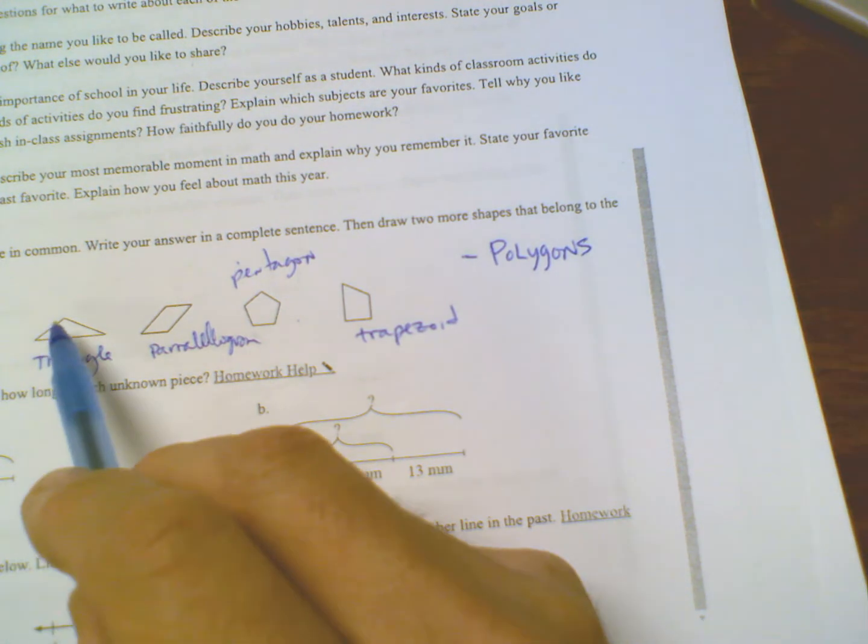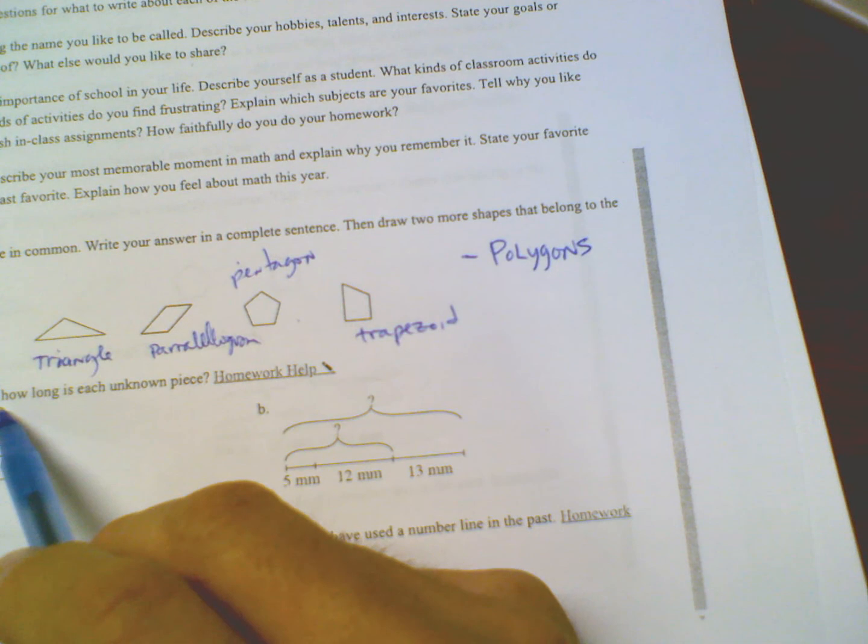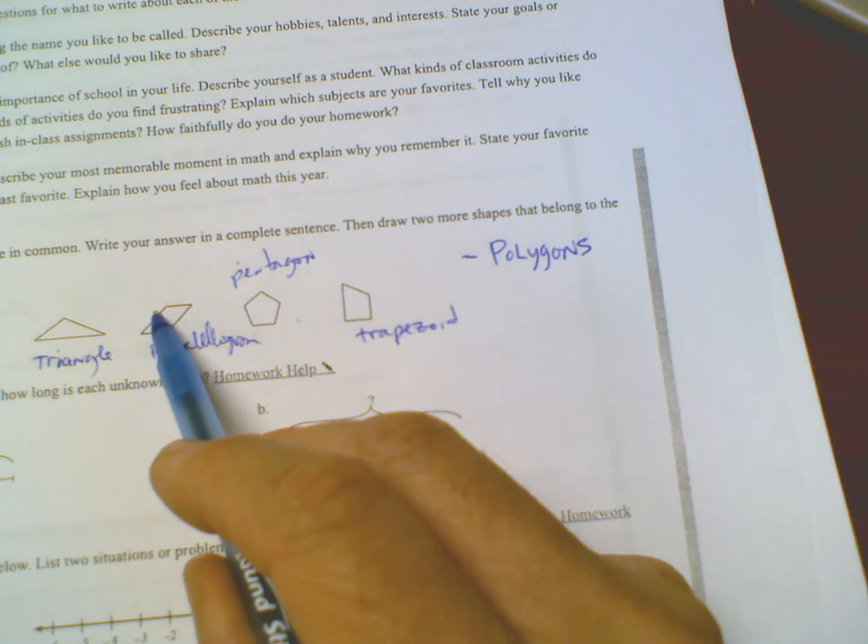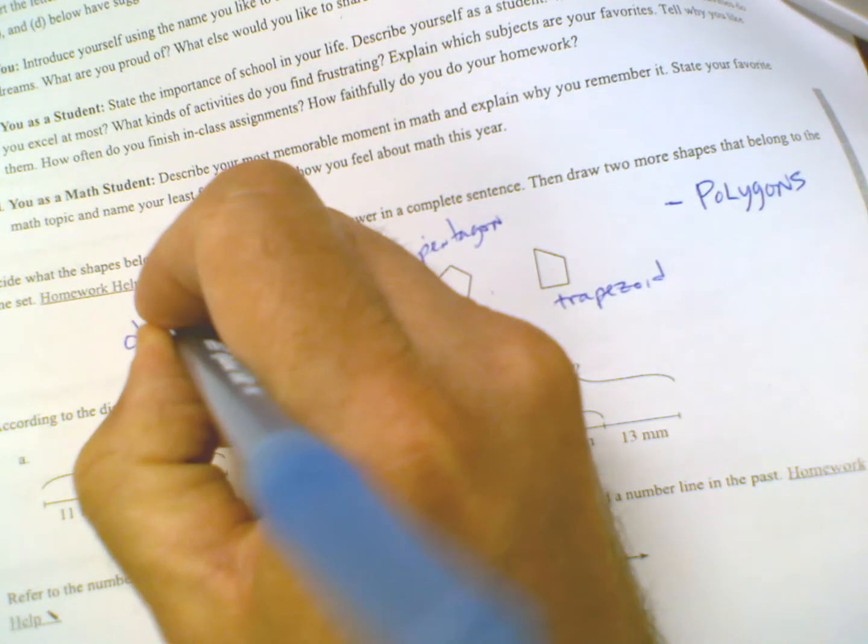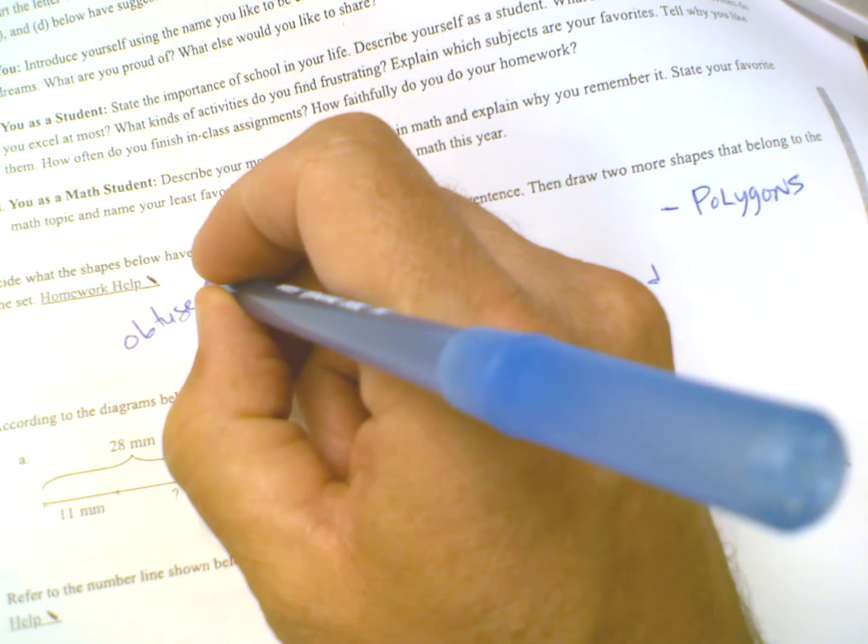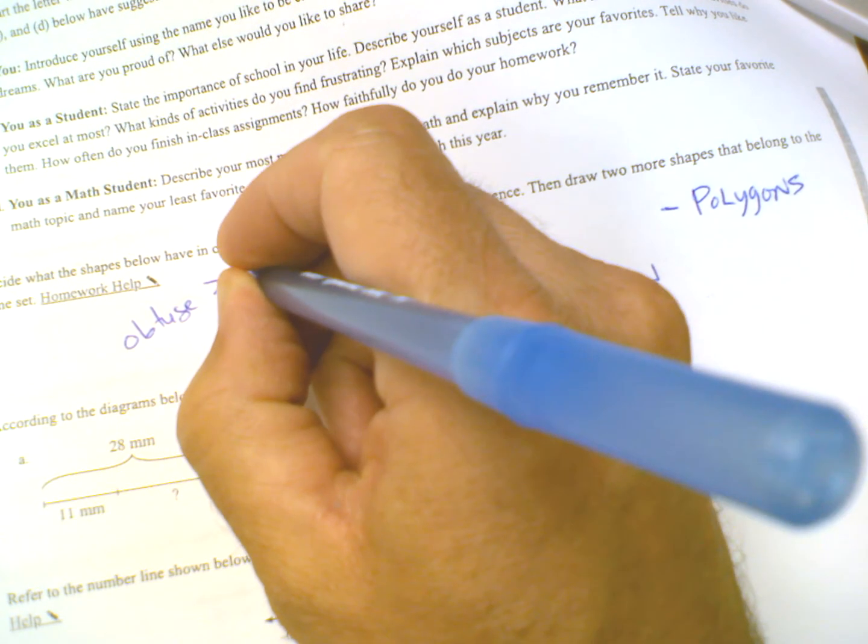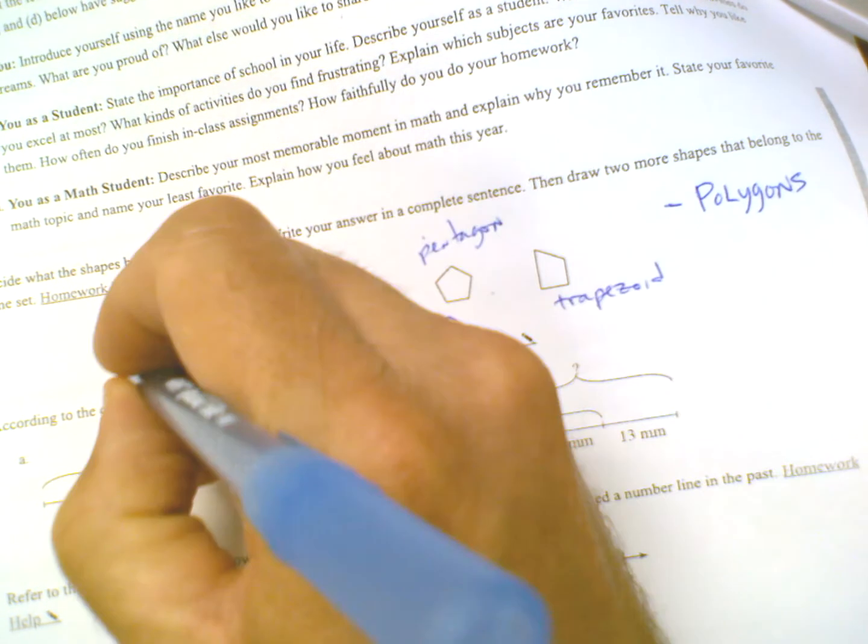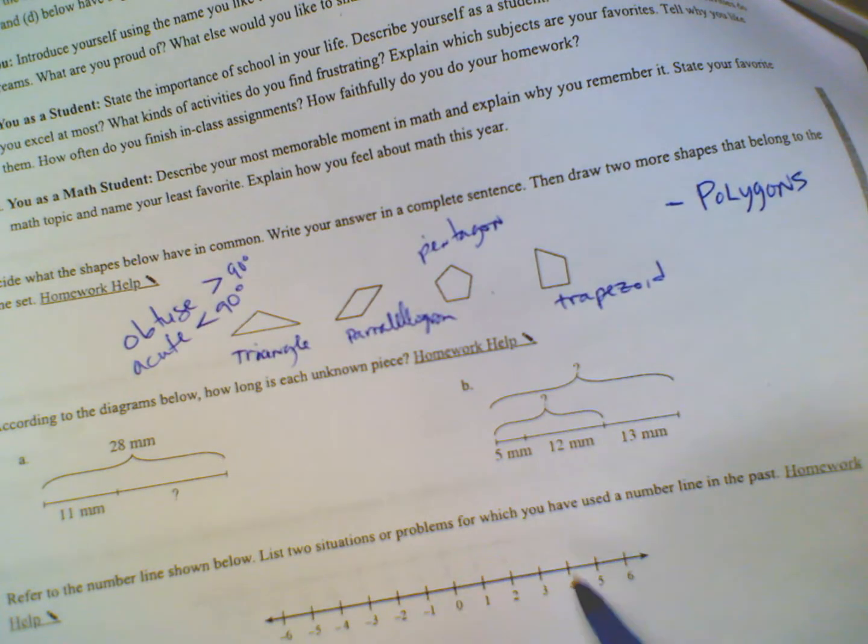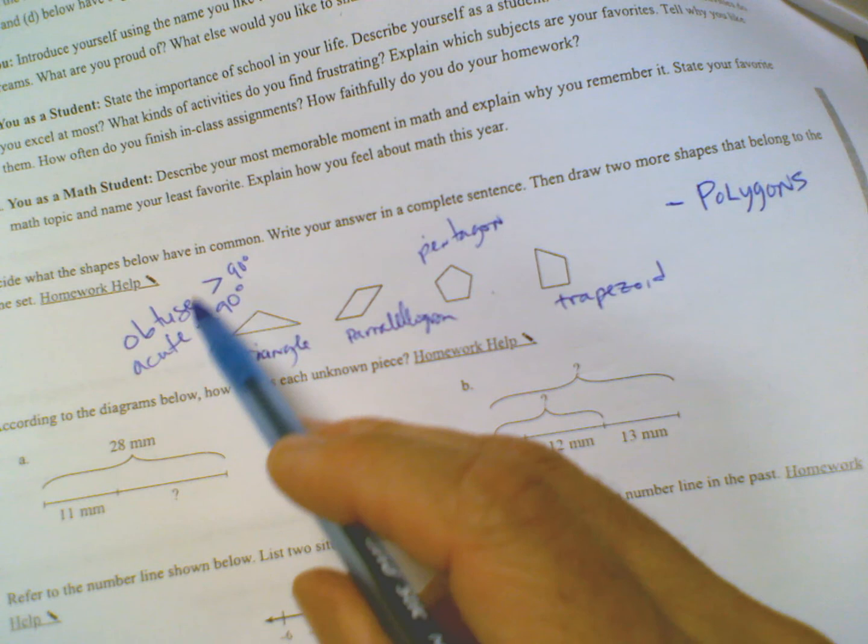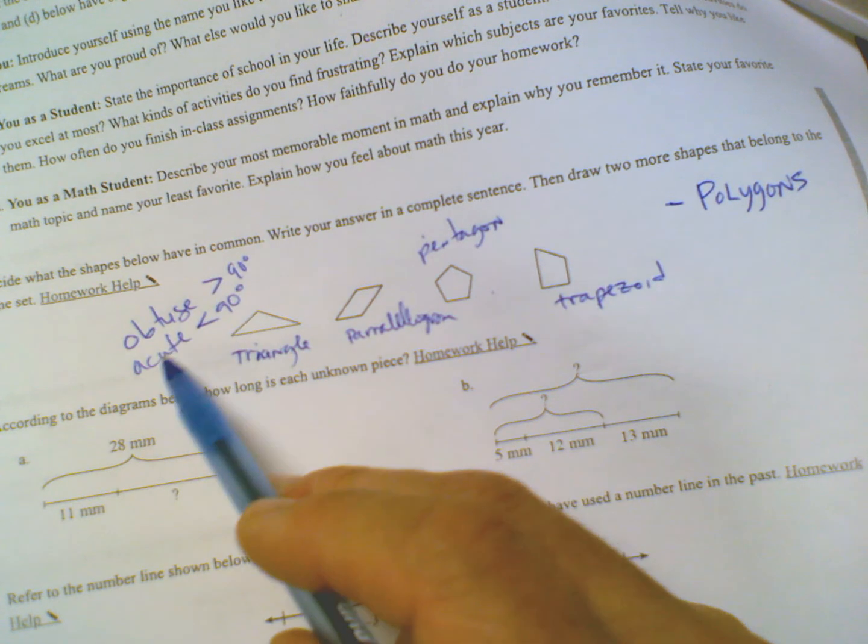What do you notice about the angles? I've got an obtuse angle and an acute angle here. Let me go over here. Obtuse is greater than 90 degrees, and acute is less than 90 degrees. Just a reminder of what obtuse and acute angles are.